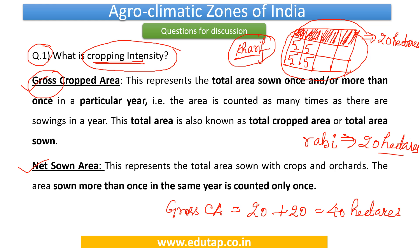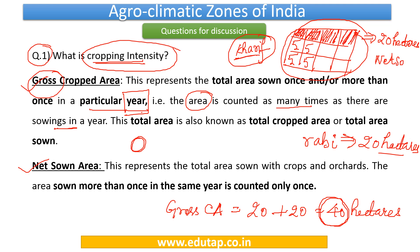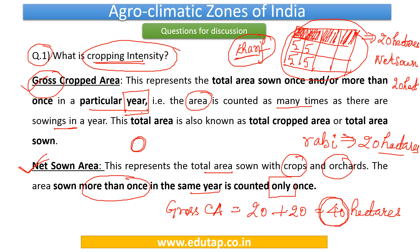When we calculate gross cropped area, we take into account the number of times a particular land is sown during an agricultural year — the area is counted as many times as there are sowings in a year. So here, these patches were sown in Kharif and again in Rabi, totaling 40 hectares. But for the net sown area, the answer is just 20 hectares, because we count the land only once regardless of how many times it is sown.